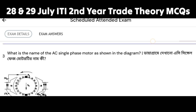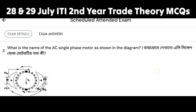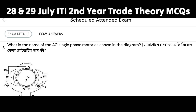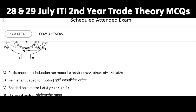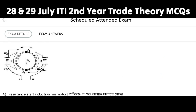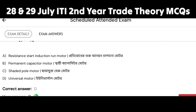What is the name of the AC single-phase motor as shown in the diagram? This is a CVT exam question. Here we have the circuit diagram of a single-phase motor. The options are: resistance start induction run motor, permanent capacitor motor, shaded pole motor, and universal motor. Option D, universal motor, is the correct answer.